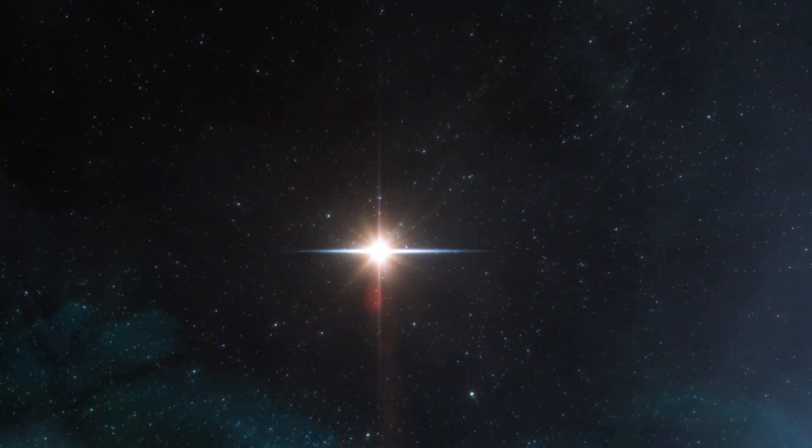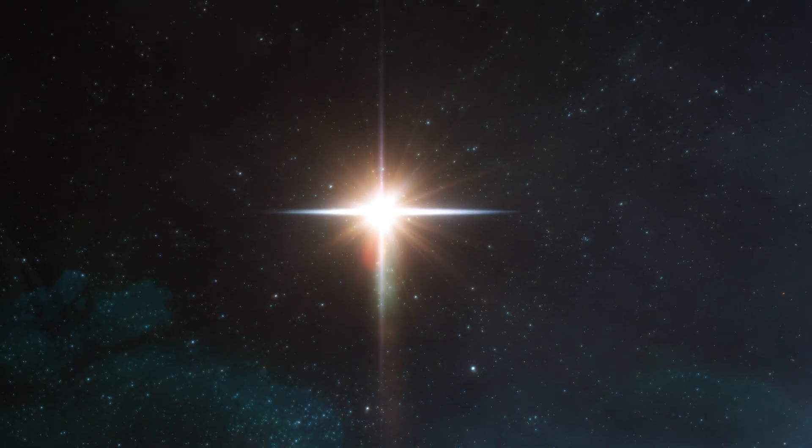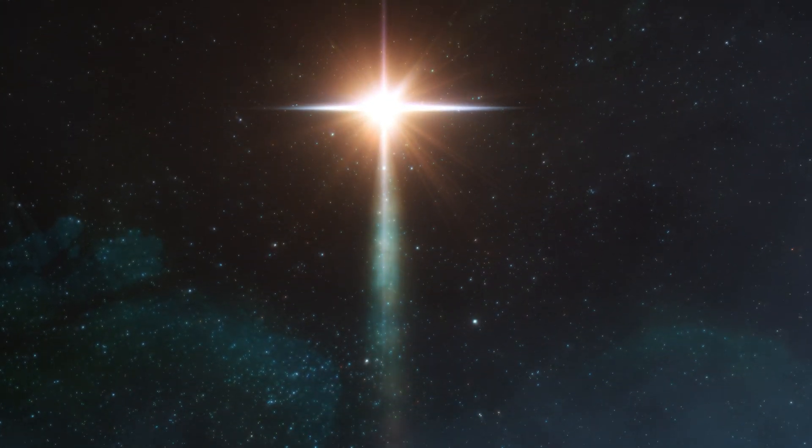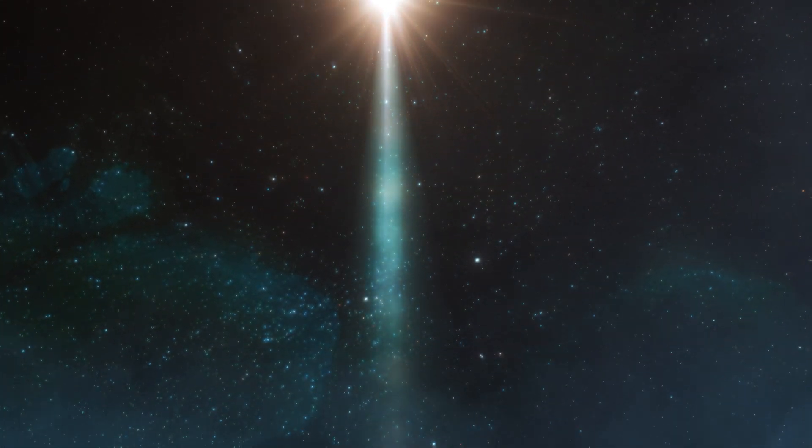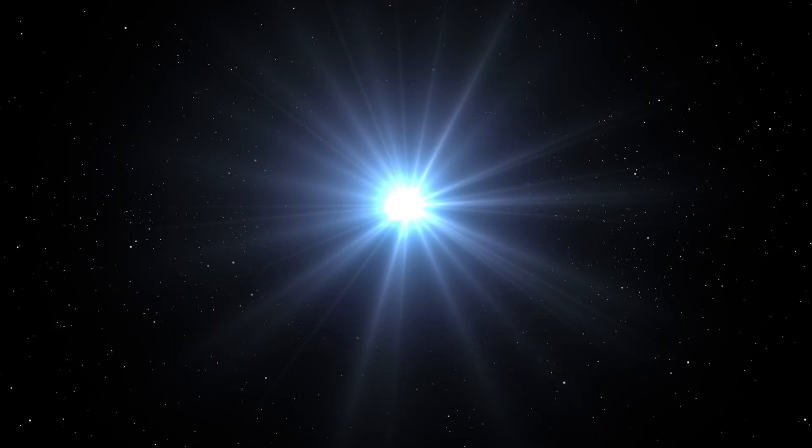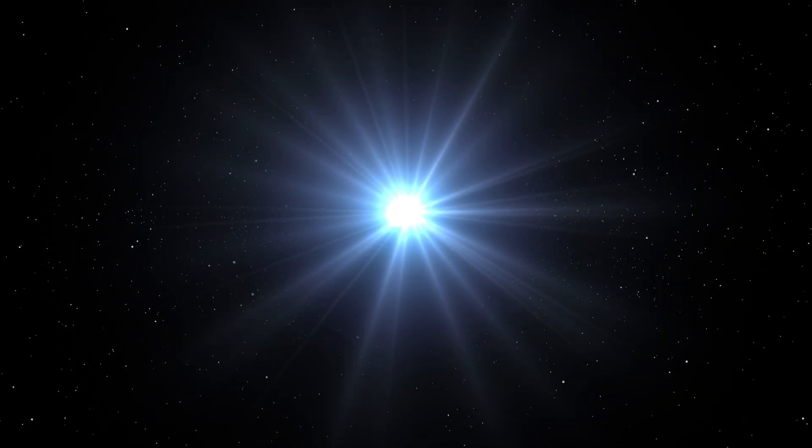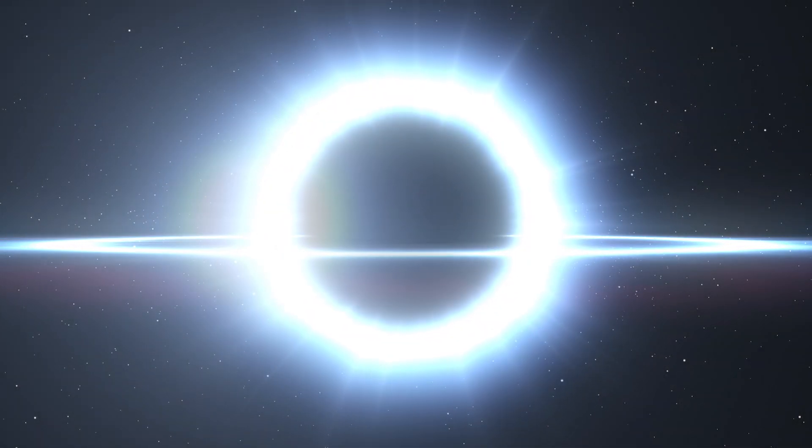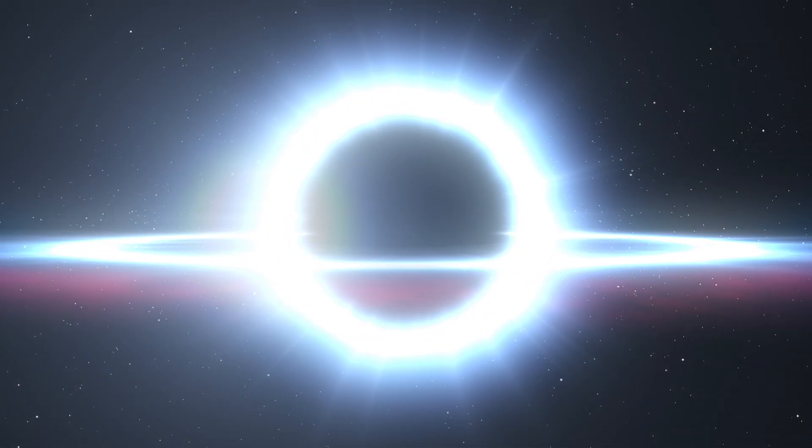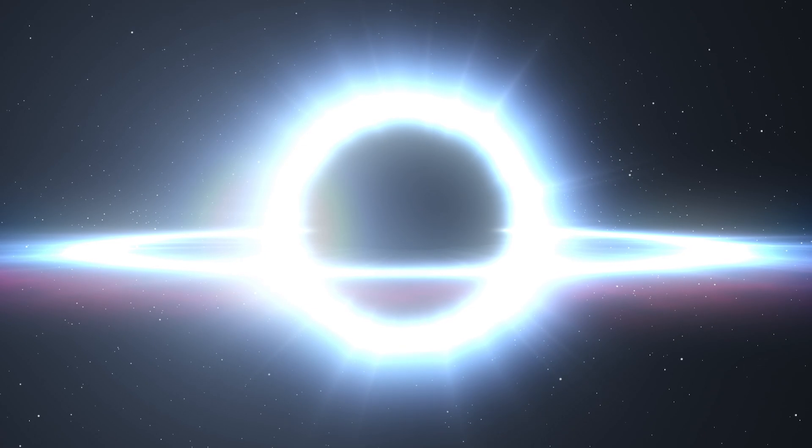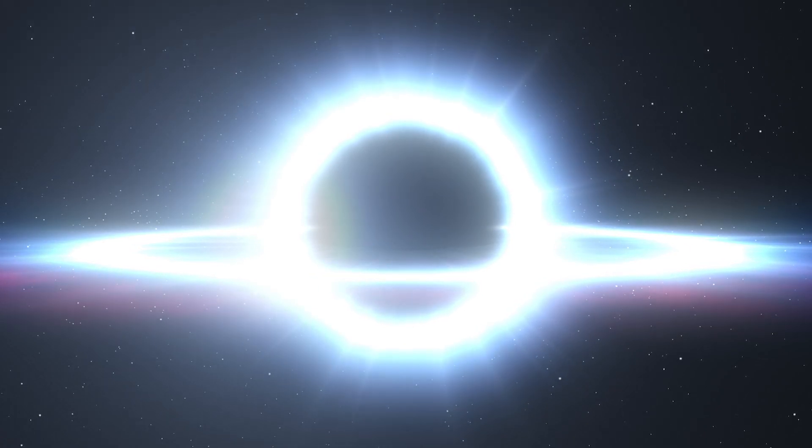Stellar collapse theory is a fundamental concept in the study of black holes. According to this theory, black holes are formed when massive stars run out of fuel and exhaust their nuclear fusion processes. When this happens, the star's core collapses under its own gravitational pull, becoming denser and denser until it forms a singularity, a point of infinite density at the center of the collapsed star.